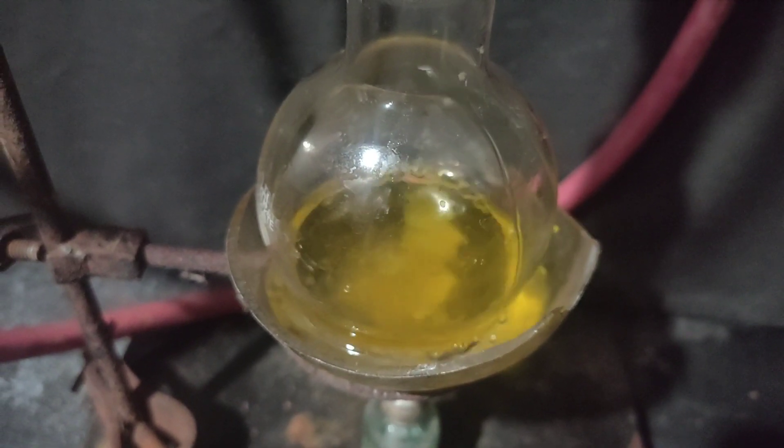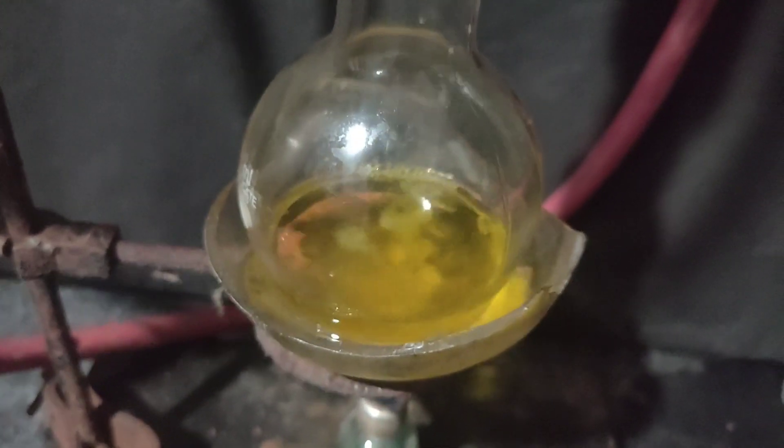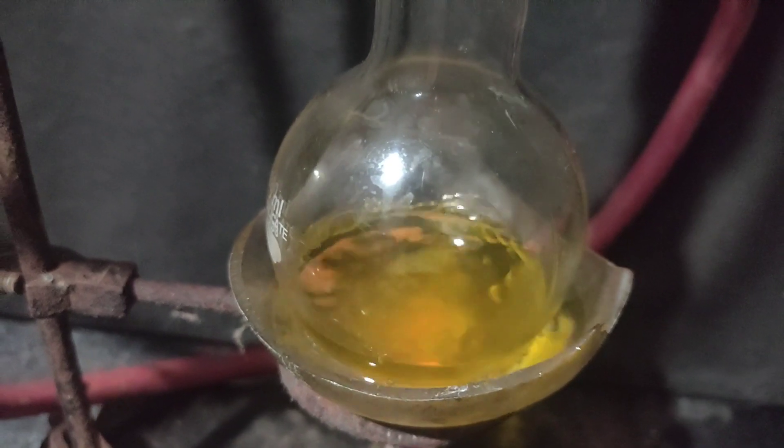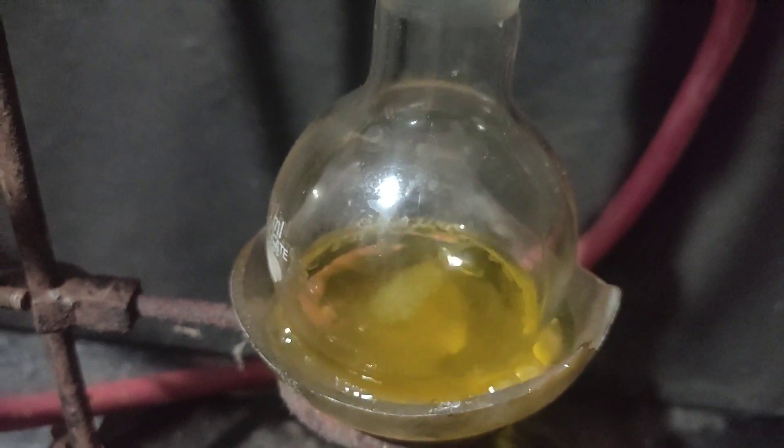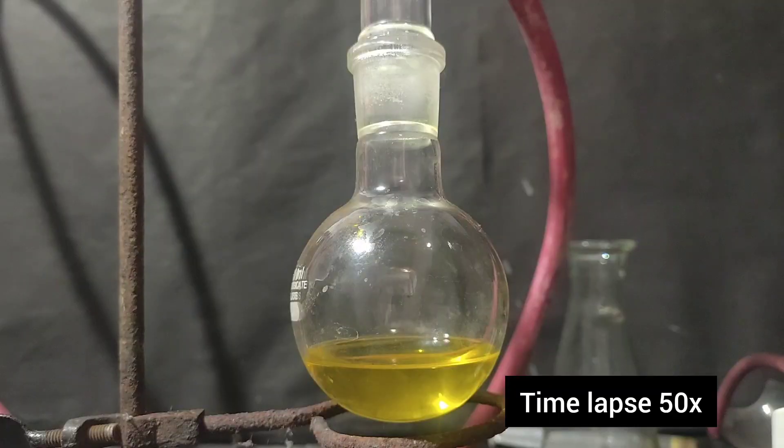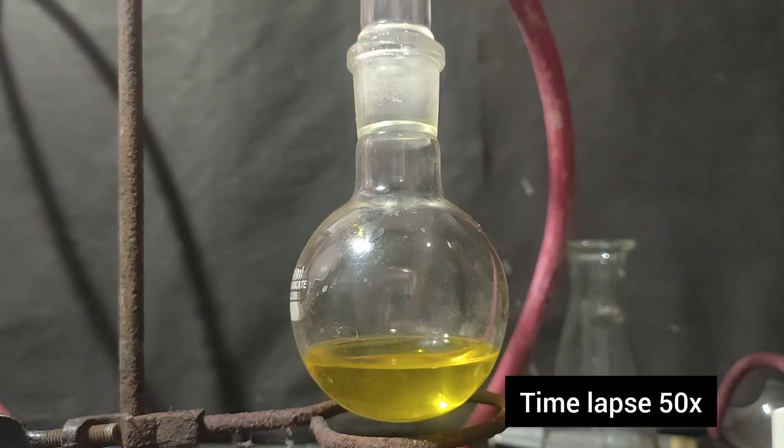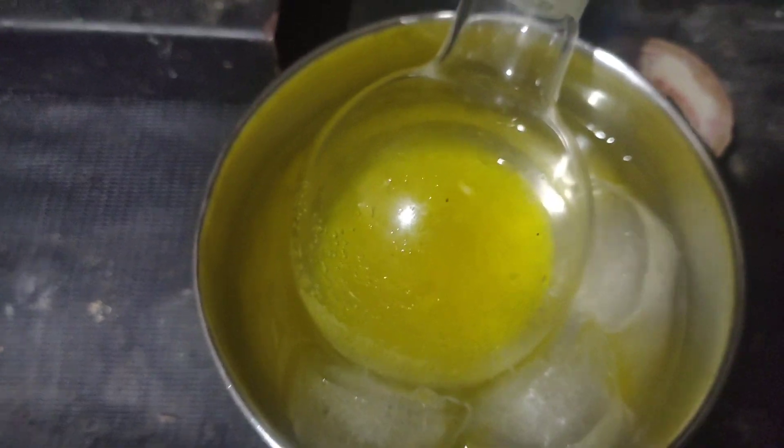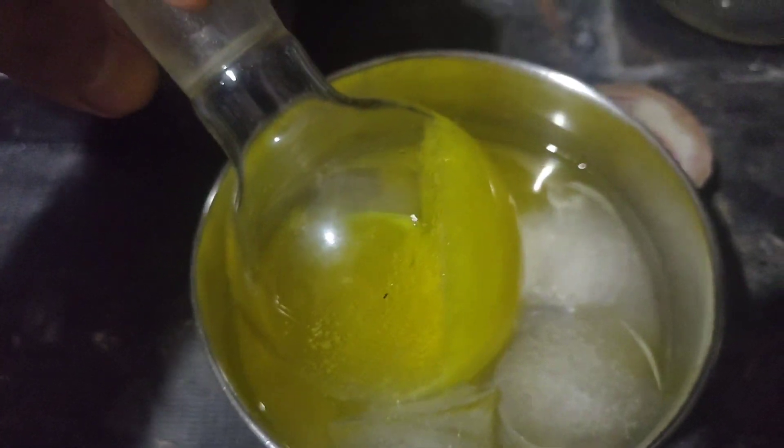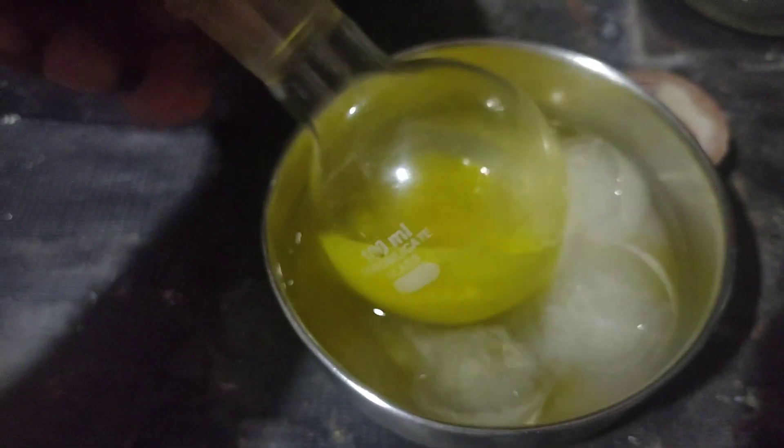On heating, the meta-dinitrobenzene dissolved in the ethanol. When all the meta-dinitrobenzene dissolved, the flask was cooled at room temperature. I kept the flask in the ice bath to precipitate most of the crystals of meta-dinitrobenzene.